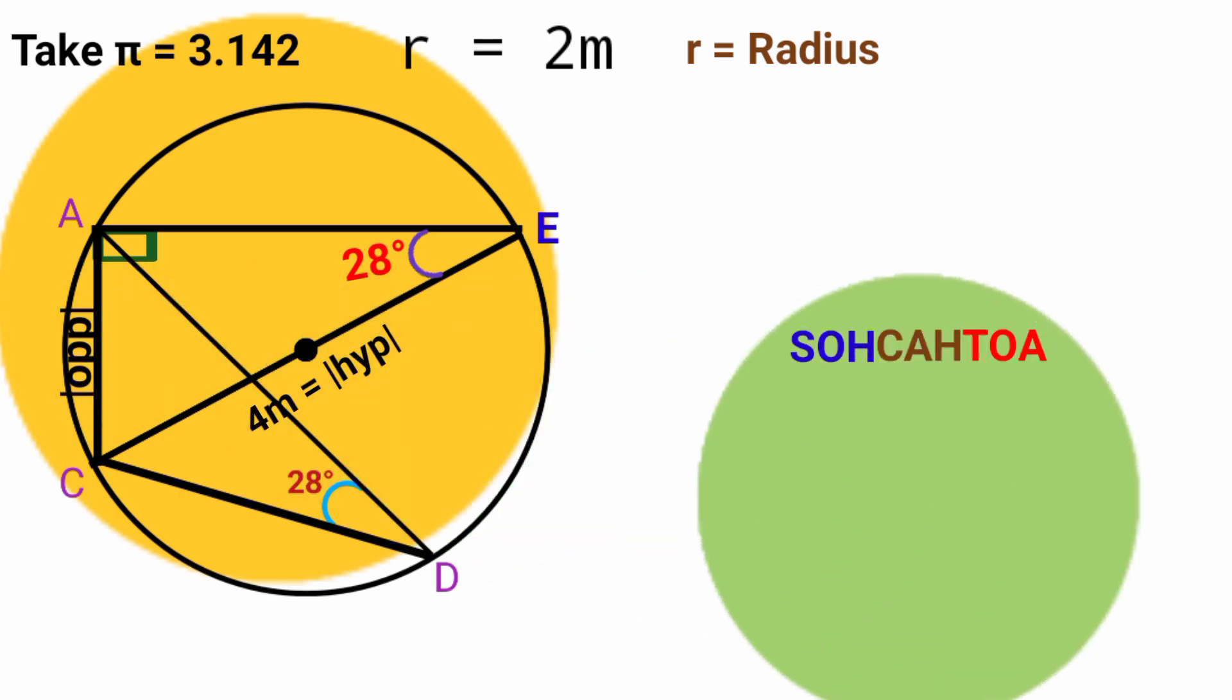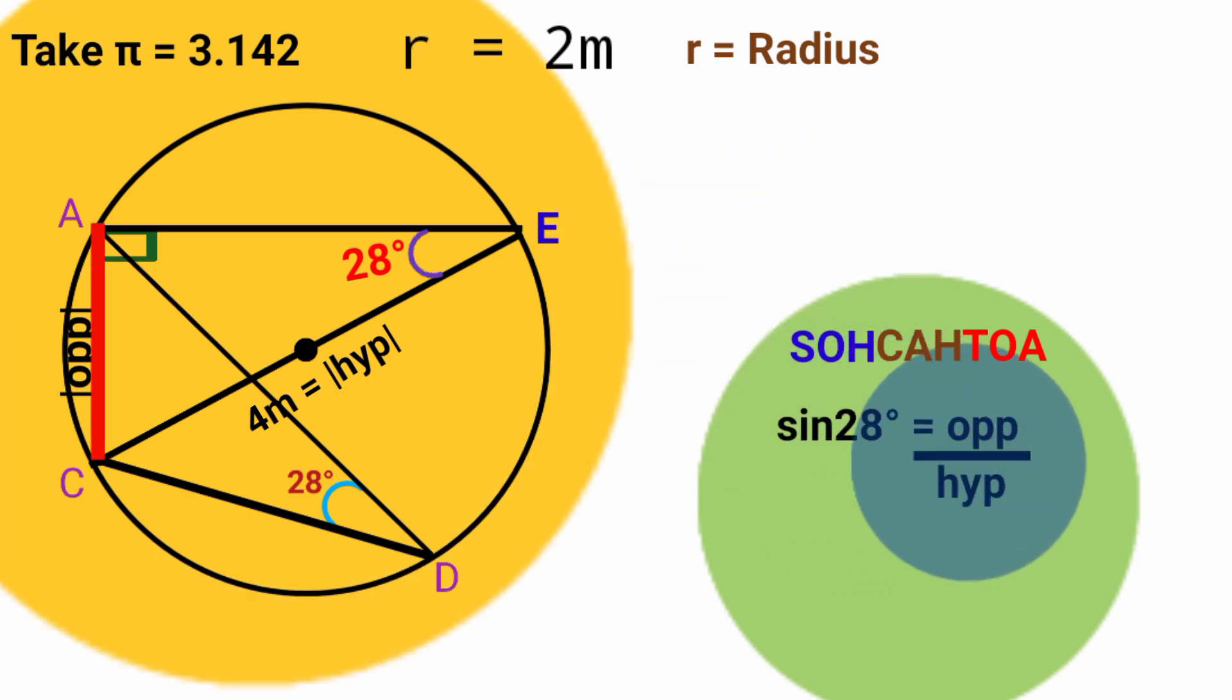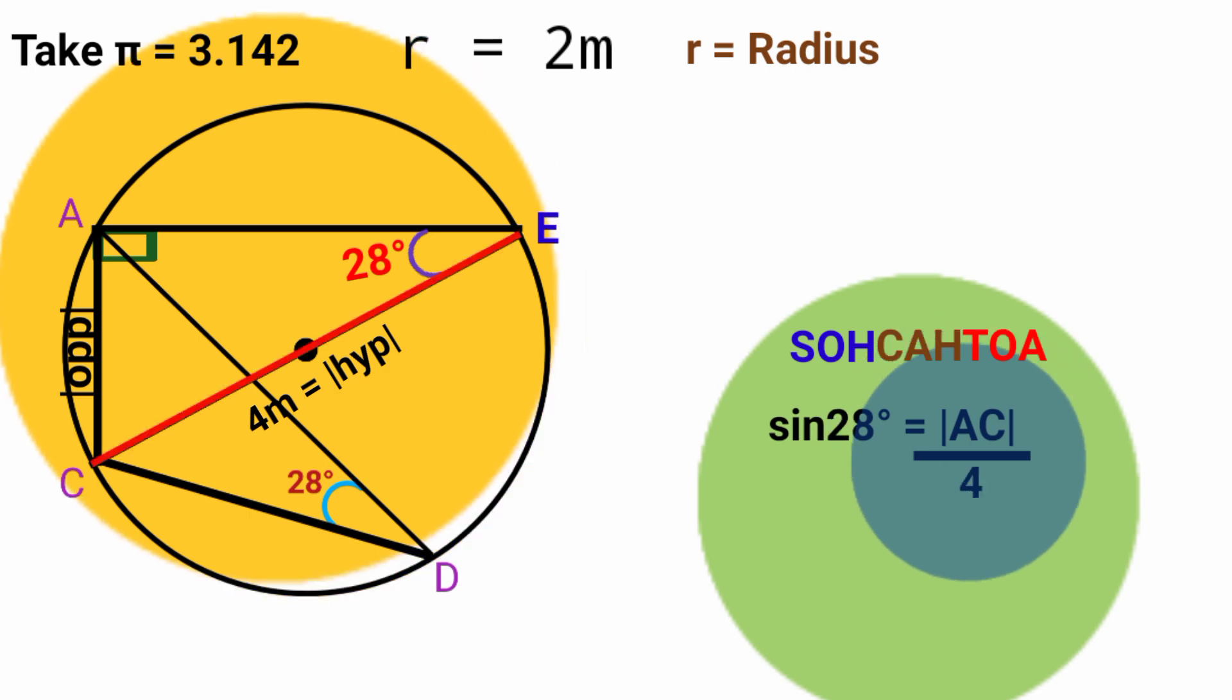SOH just means sine θ equals opposite over hypotenuse. Recall since this is 28 degrees our θ is 28 degrees. And here our opposite is line AC. Hypotenuse is 4 meters. So now sin 28° is equal to line AC over 4.